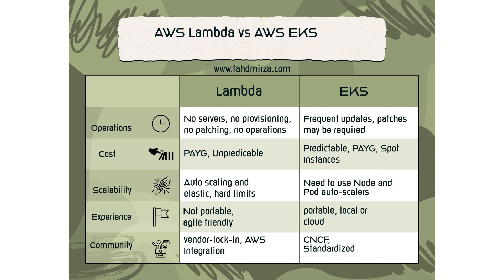Apart from these five categories, there are various other considerations to take into account. One is monitoring and logging. Both Lambda and EKS integrate with CloudWatch, which is AWS's monitoring and logging service. Moreover, EKS also integrates with other monitoring and logging systems — for example, ELK and EFK stacks — so if you want to use those, you can.